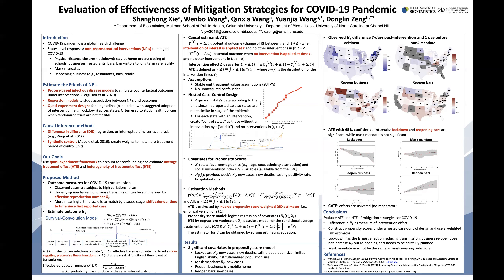We used the nested case-control design. For covariates, we included both time-invariant covariates, such as state-level demographics and SVI, and also time-variant covariates, including HIT. The ATE is estimated by inverse propensity score weighted difference-in-differences estimator. We used logistic regression to construct the propensity scores.